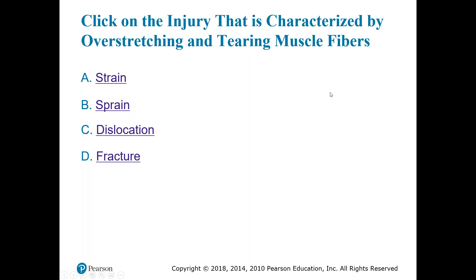An injury characterized by overstretching and tearing of muscle fibers — on any EMS-related question, we can eliminate dislocation and fracture immediately, because neither describes an injury to muscle fibers. A fracture is a break in bone; a dislocation is bones slipping out of place. When looking at strain versus sprain: a sprain usually involves the tendons and ligaments, while a strain involves the muscle fibers — so the answer is strain.